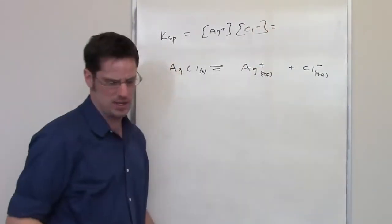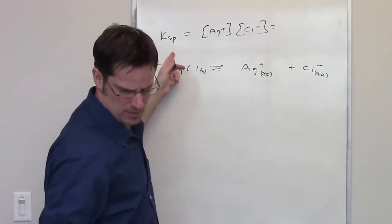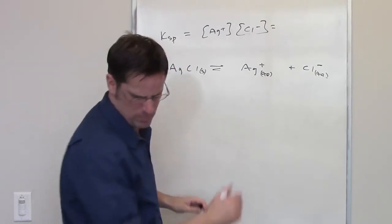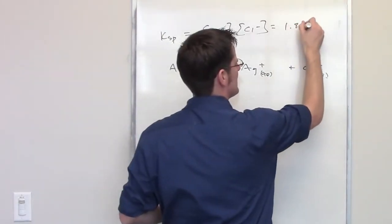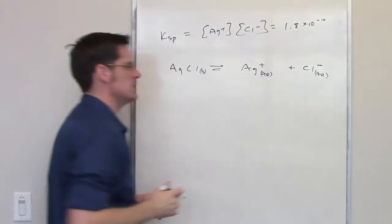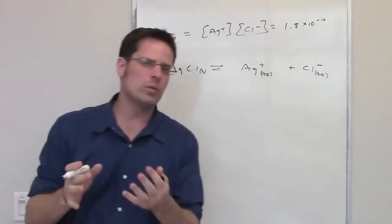It tells me in this problem, the solubility constant Ksp is equal to 1.8 times 10 to the negative 10. So I have an actual number here. So how in the world do we do this question?